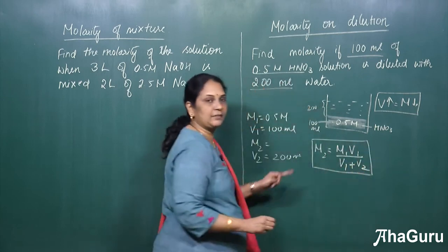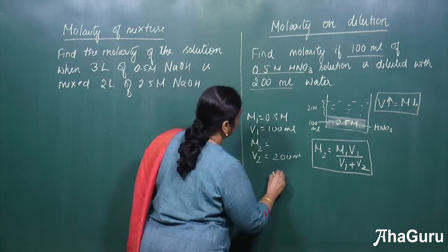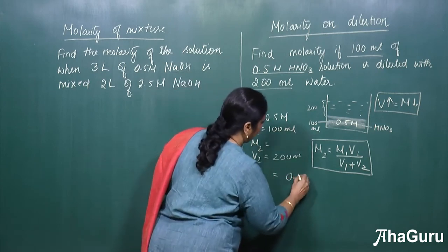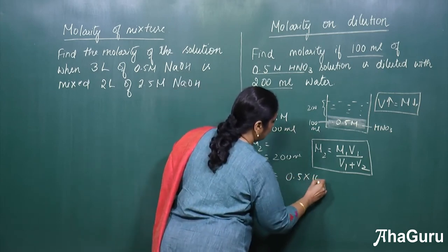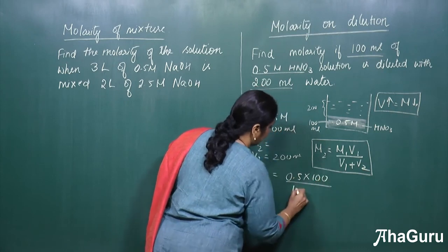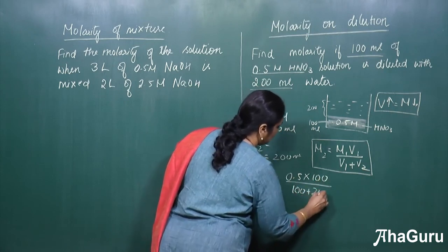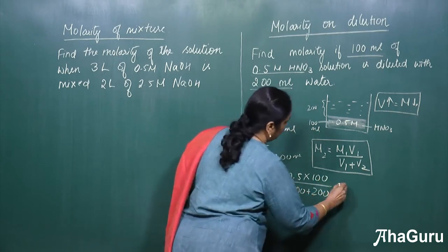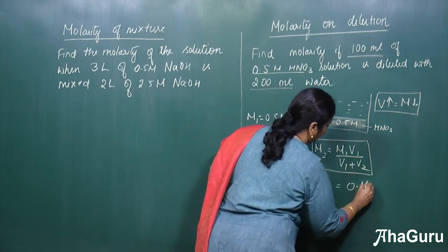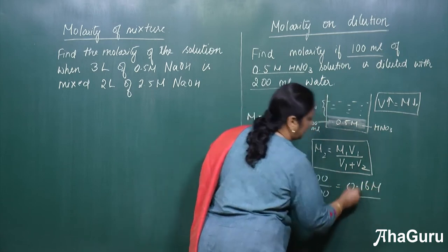Substituting the values here we will get, M1 is 0.5 into 100 divided by 100 plus 200 ml. So this would be equal to 0.16 M.